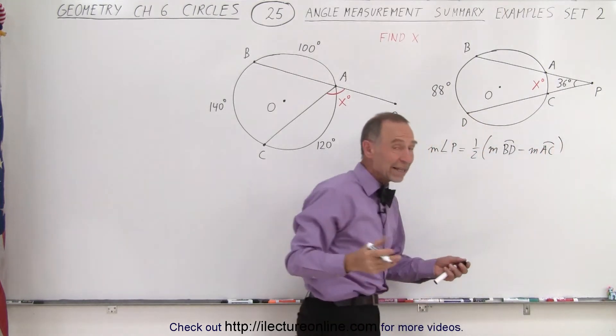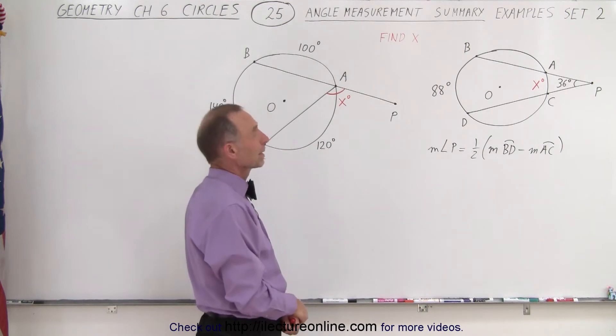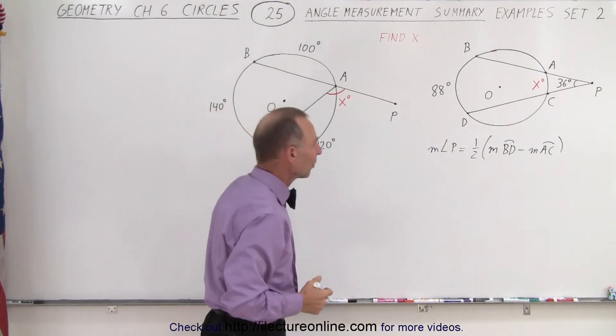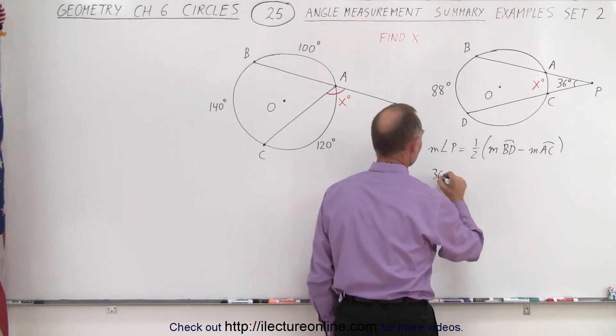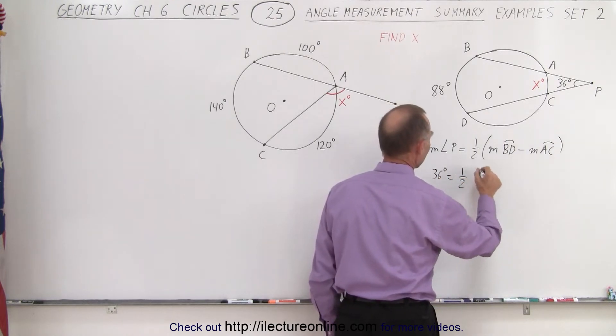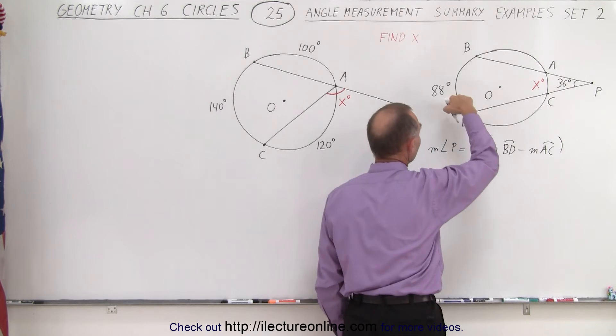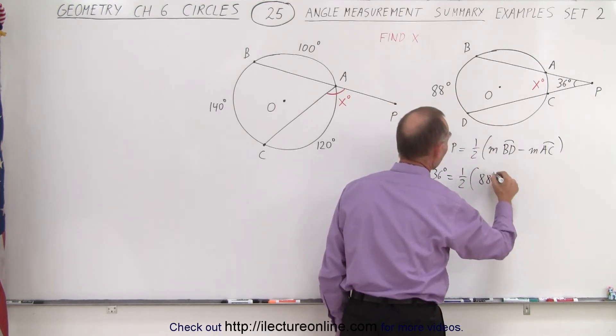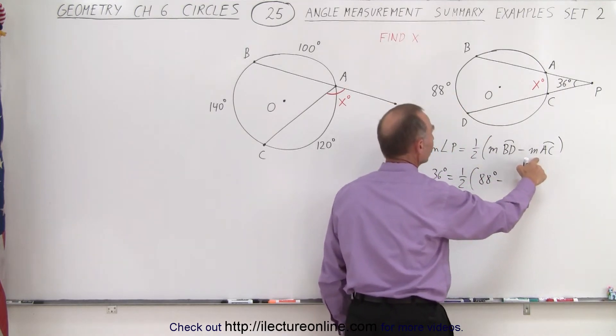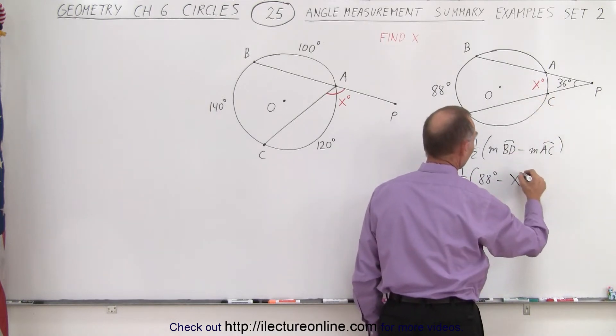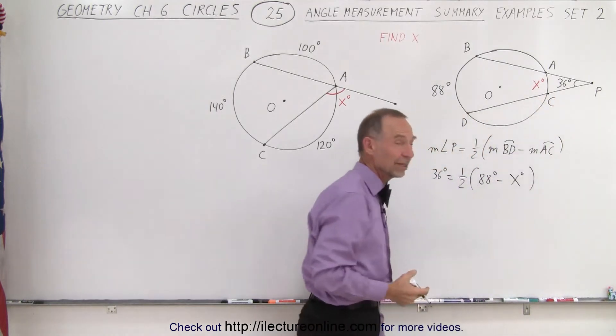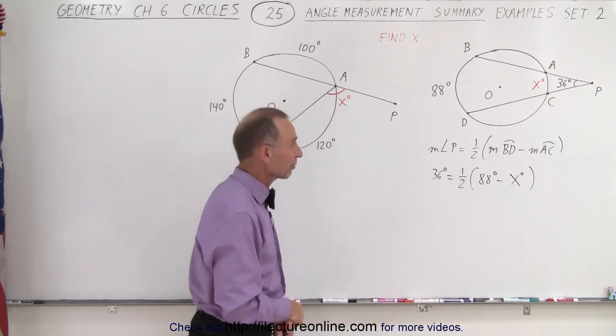And it's actually the measure from A to C that we're trying to find. Let's plug in and see what we have. So the measure for angle P is given, that's 36 degrees, that must be one-half times the measure from B to D which is given as 88 degrees minus the measure from A to C. So we can simply replace that by x degrees because that's what we're looking for, x degrees is the measure for the arc length from A to C.